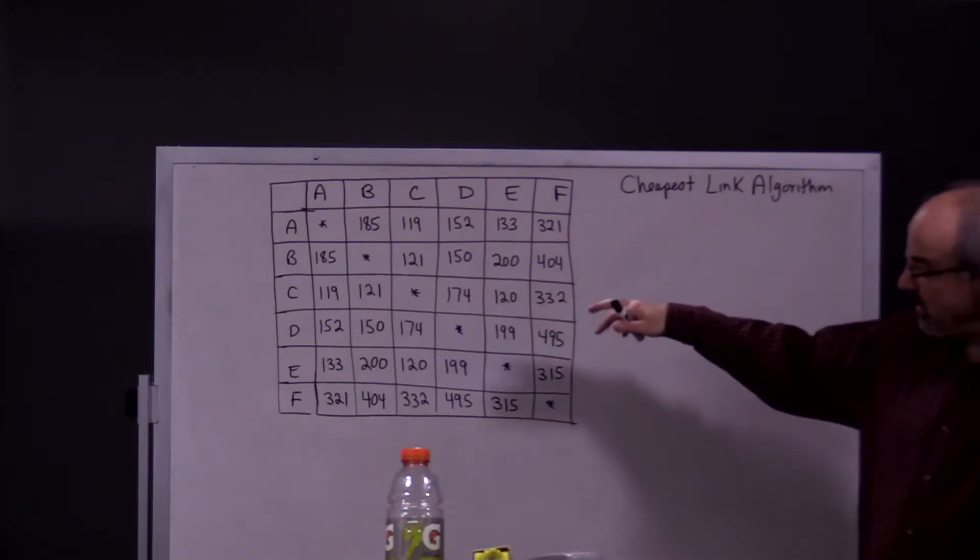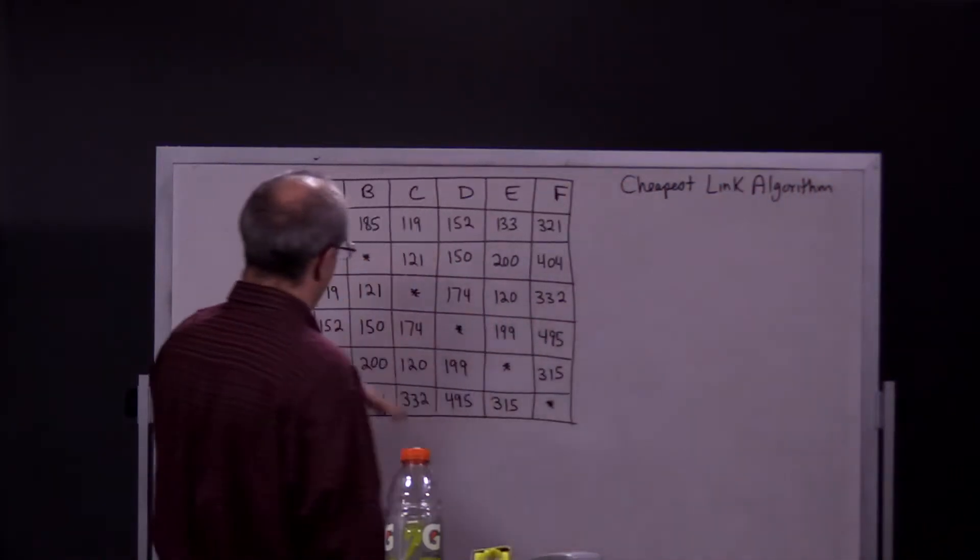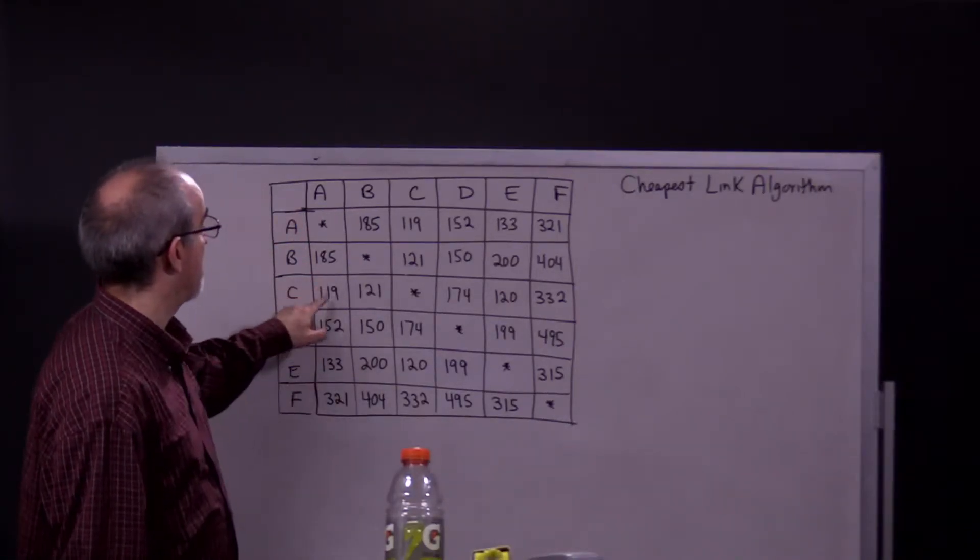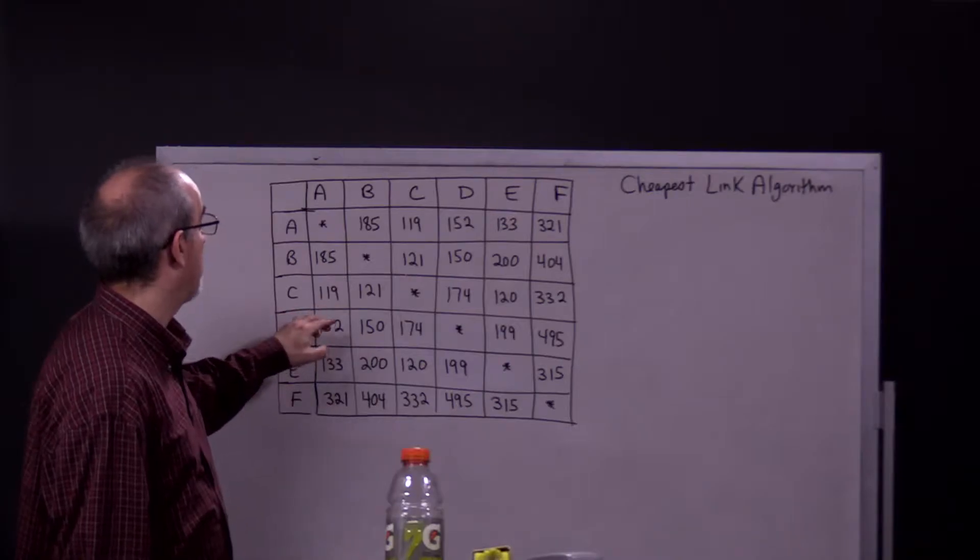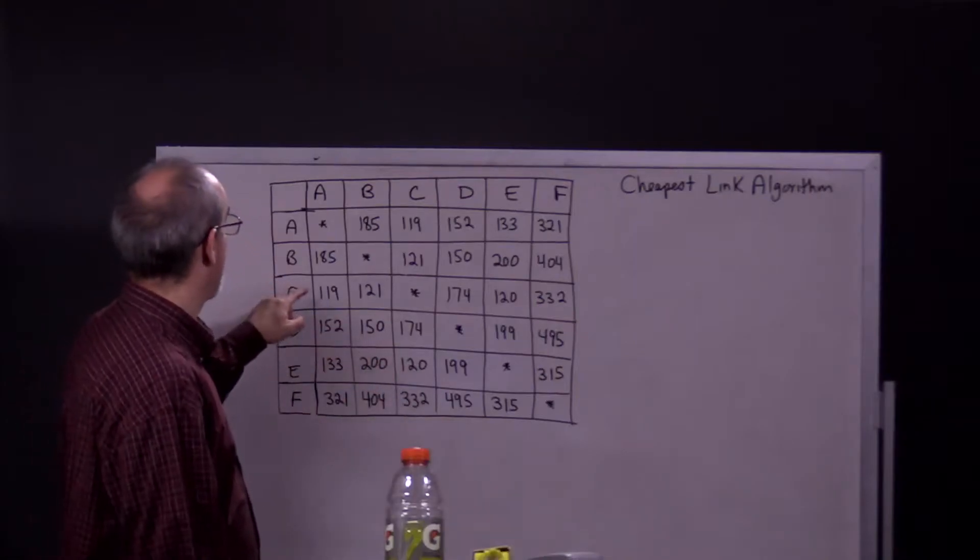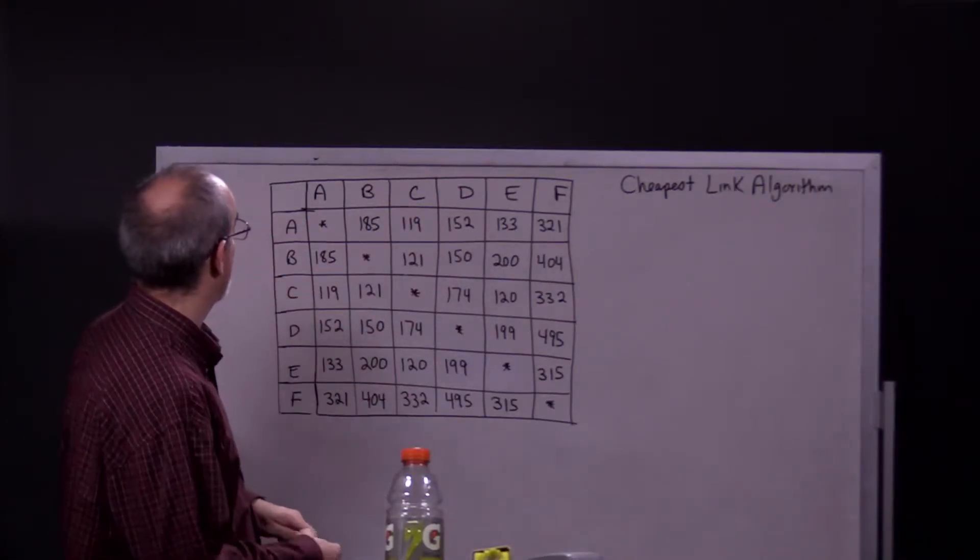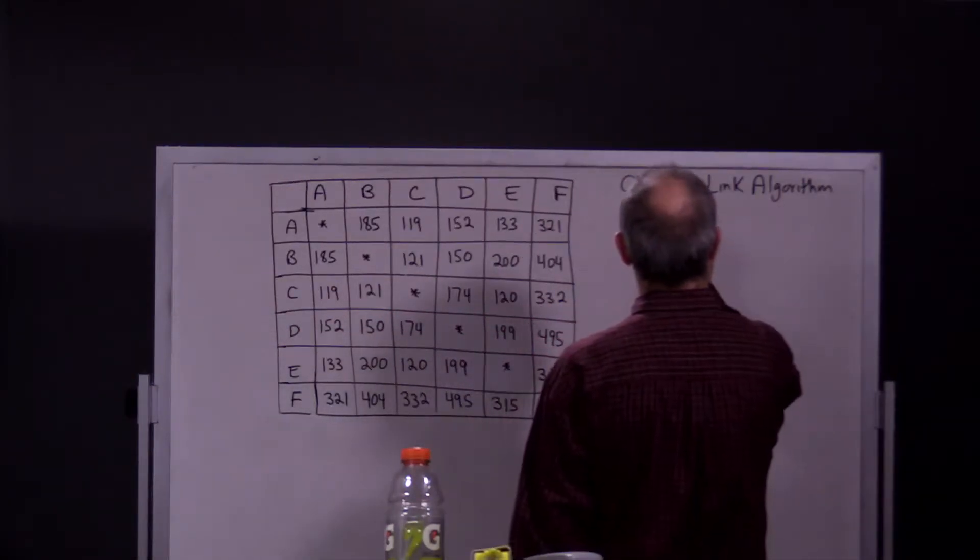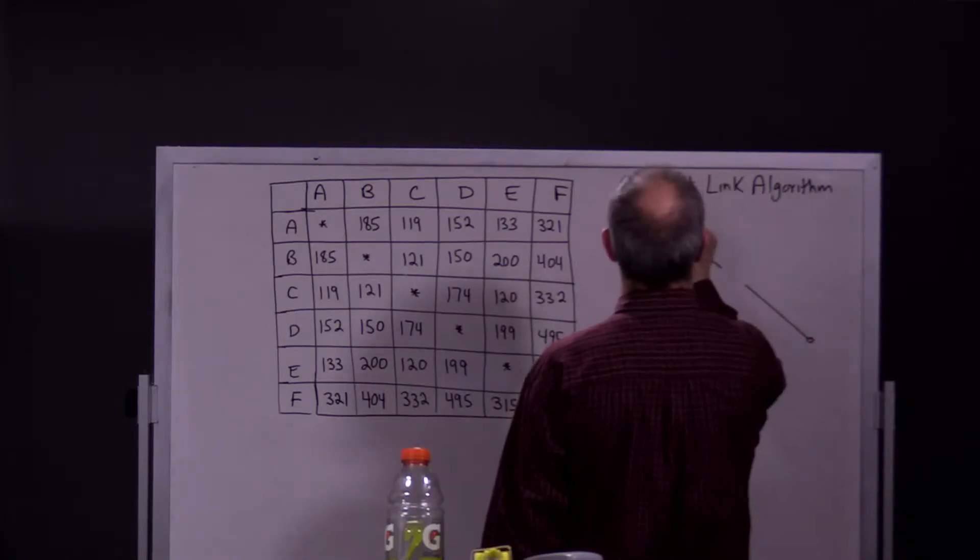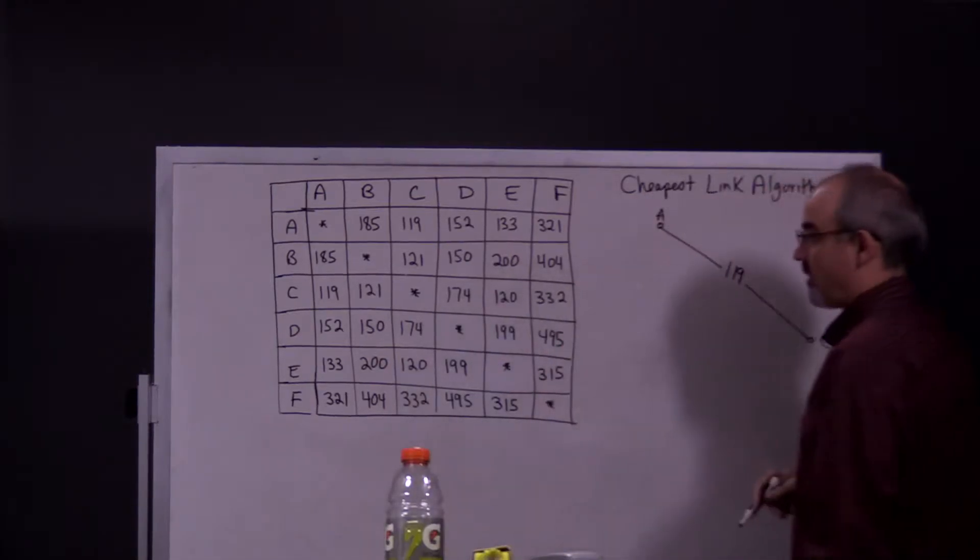So the first step is to actually look at your chart. And you have to do this very carefully, find the smallest number. I believe it is because I've looked at this chart several times. So 119 is the weight of the edge AC. So I'm going to draw that.